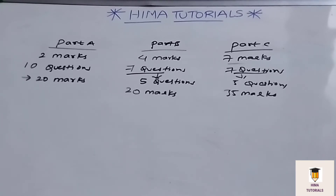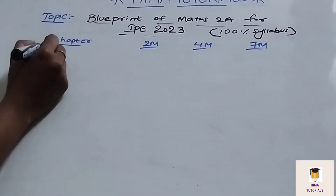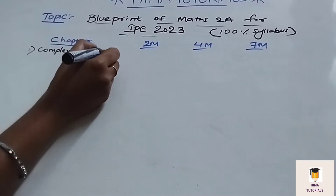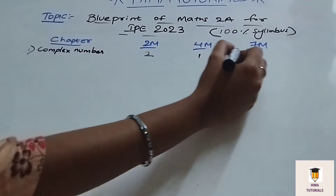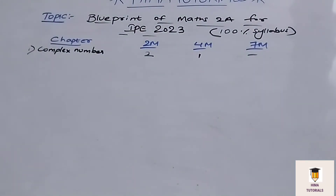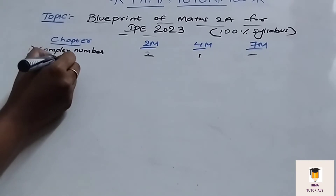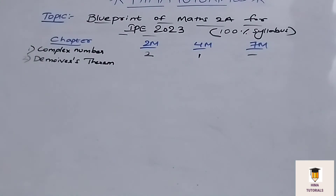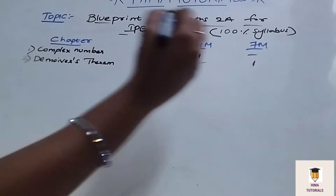That is about the Question Paper Pattern. Now let's see the Blueprint for Maths 2A for IPE 2023. The first chapter is Complex Numbers. In Complex Numbers, we get 2 two-mark questions and 1 four-mark question. Coming to the next chapter, De Moivre's Theorem — in this chapter, we will get 1 two-mark and 1 seven-mark question.